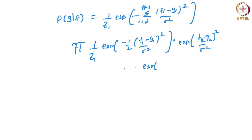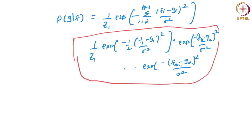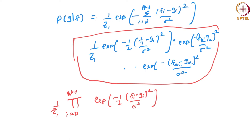You can write this for all pixels all the way to exponential of minus (FN−1 minus GN−1)² / σ². It is a multiplication — for each pixel you have a term like this, and when you multiply, you sum in the exponent. In compact form: product over i from 0 to N−1 of exponential of minus (1/2)(Fi−Gi)² / σ².